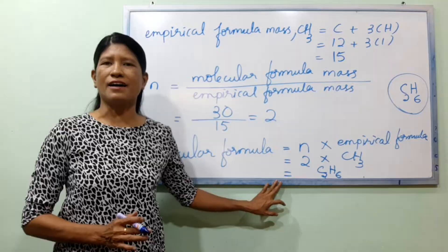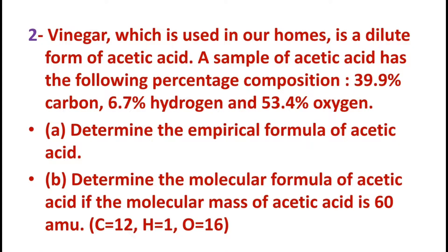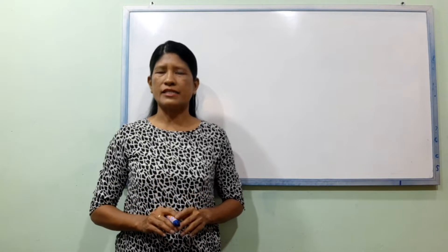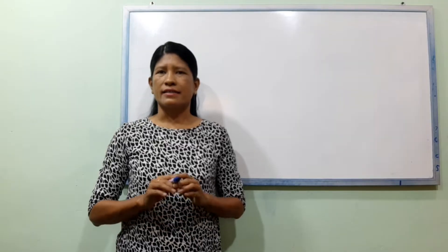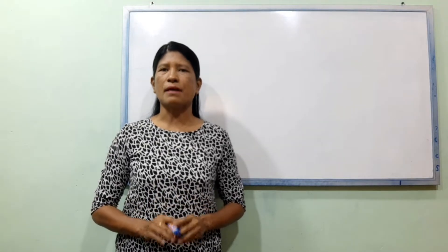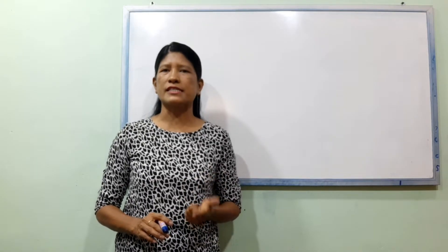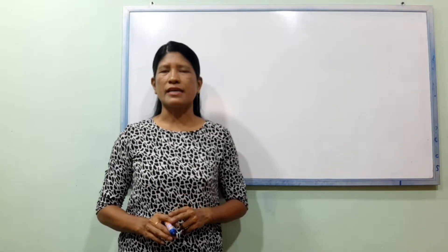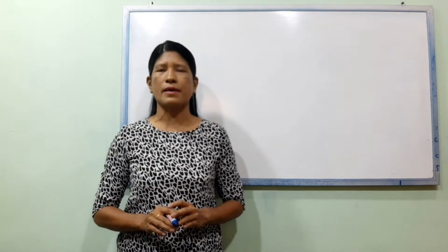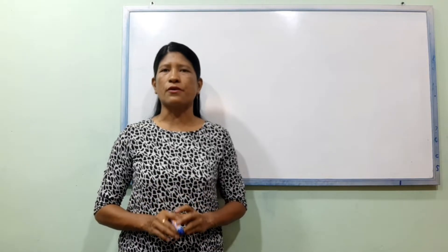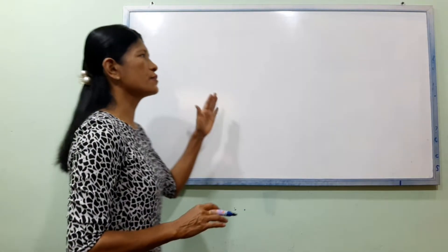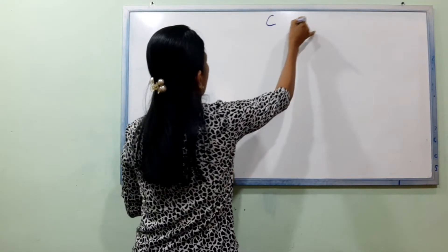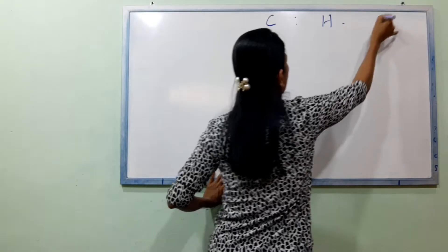Now you need to break it down. The next example: the empirical formula is CH3. In this case, the compound is called SDS — containing carbon, hydrogen, and oxygen. In this case, the SDS has an empirical formula. The molecular formula is the molecular formula of SDS — containing carbon, hydrogen, and oxygen.